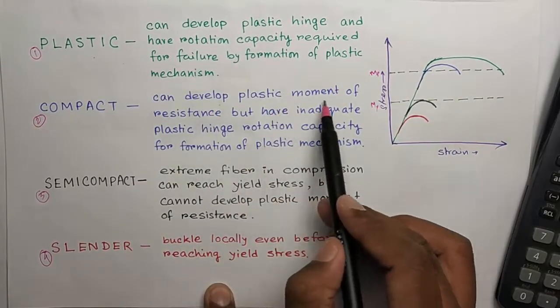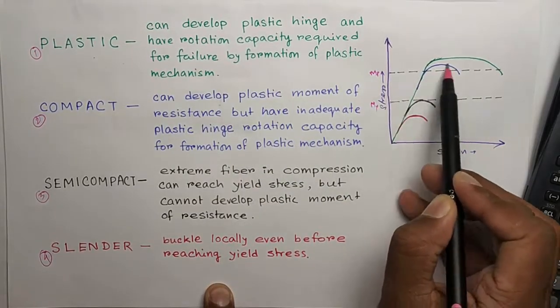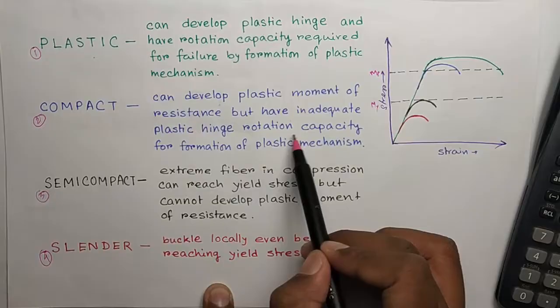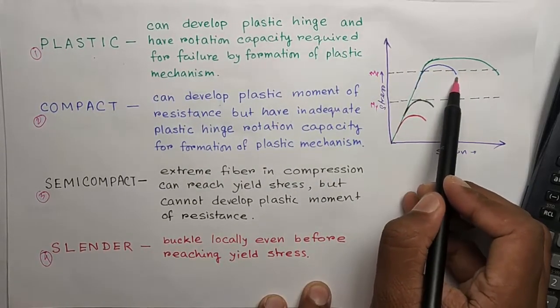Compact section can develop plastic moment of resistance. So you see it goes above this MP but inadequate plastic hinge rotation capacity. So after just reaching this MP, the compact section fails.